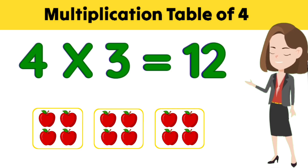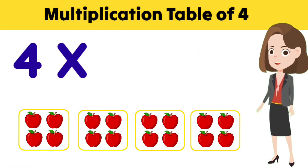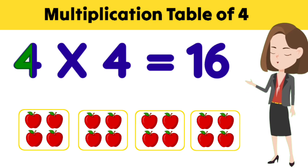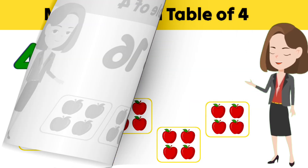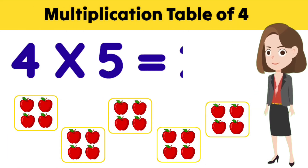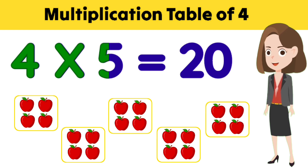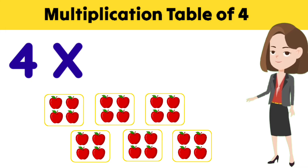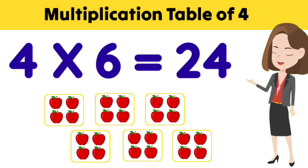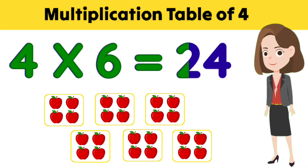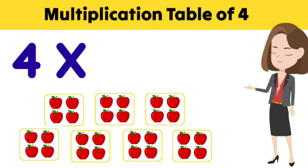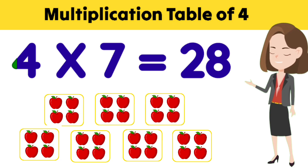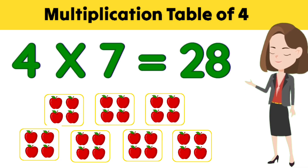Four threes are twelve. Four fours are sixteen. Four fives are twenty. Four sixes are twenty-four. Four sevens are twenty-eight.